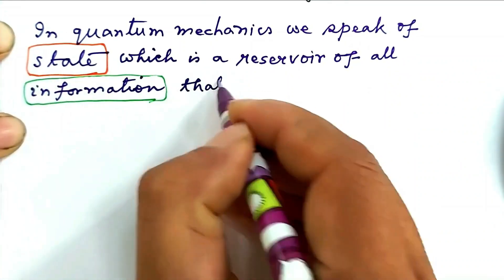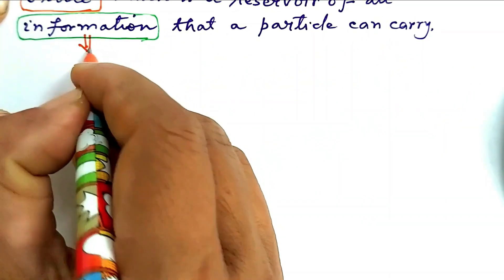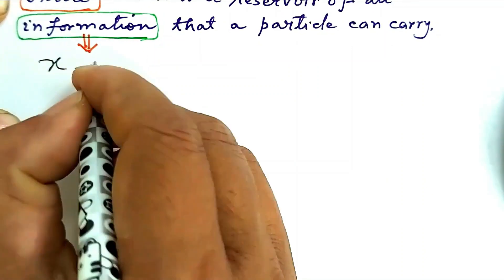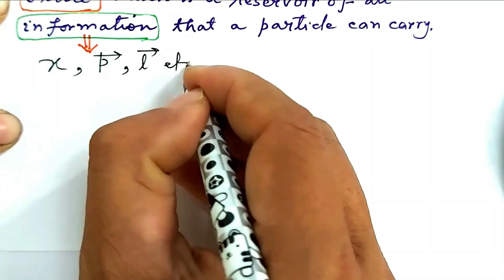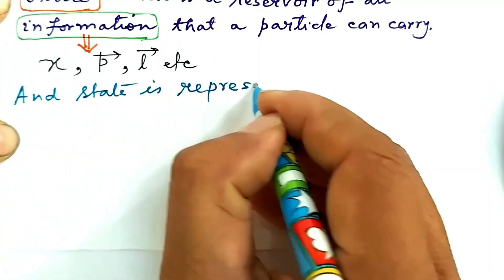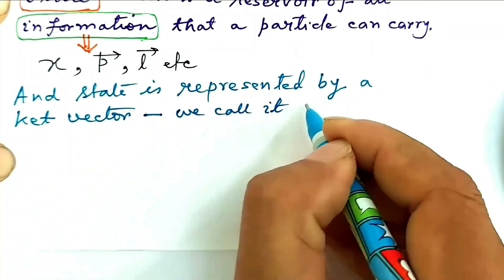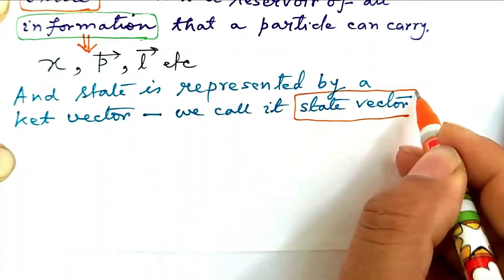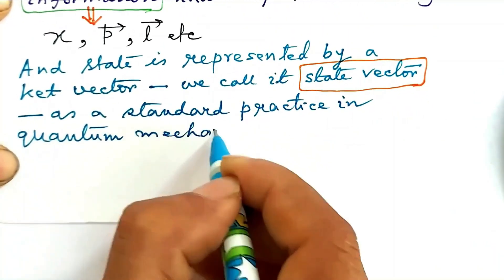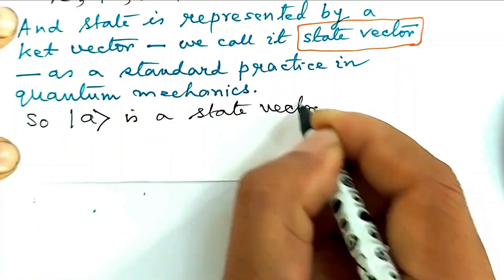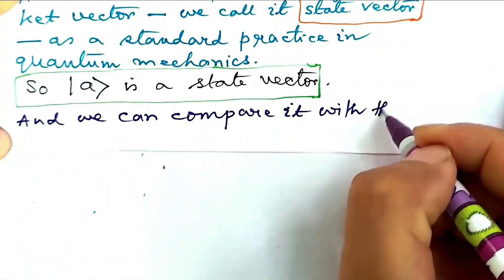In quantum mechanics, we speak of a state, which is a reservoir of all information that a particle can carry — information means particle position, particle momentum, particle angular momentum, etc. A state is represented by a ket vector; we call it a state vector as a standard practice in quantum mechanics. So ket A is a state vector, and we can compare it with a vector A.